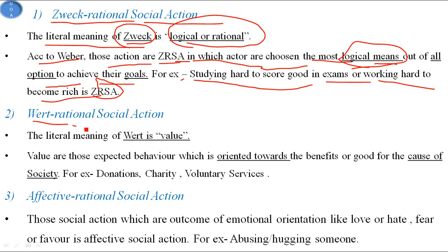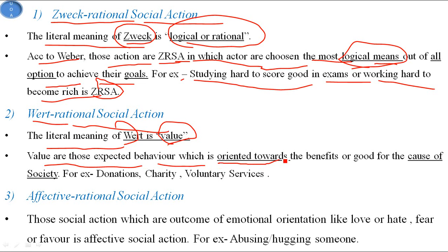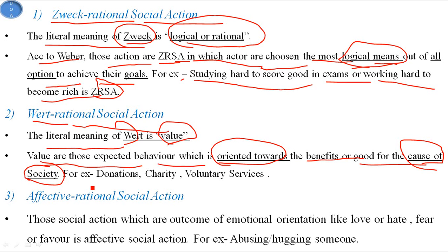The next one is Wertrational social action. The literal meaning of Wert is value. Values are those expected behaviors which are oriented towards the benefit or good of society — actions that benefit or improve society. Examples include donations, charity, and voluntary service. Here the action is oriented towards the society.